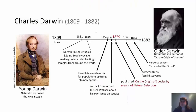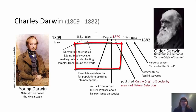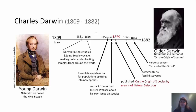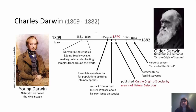If we're talking about evolution, we need to talk about Charles Darwin. Darwin was born in 1809. He went on his studies on the Beagle, making notes and collecting samples from around the world between 1831 and 1836 — a five-year period. In 1854, he formulated the mechanism for populations splitting into new species. In 1857, he contacted Alfred Russell Wallace about his own ideas on species. Wallace was publishing his ideas, and Darwin was reading them and considering them alongside his own theories. Two years later, he published On the Origin of Species by Means of Natural Selection.